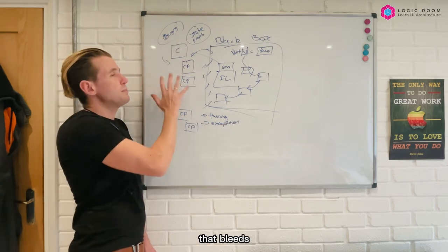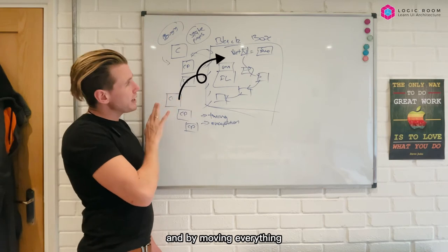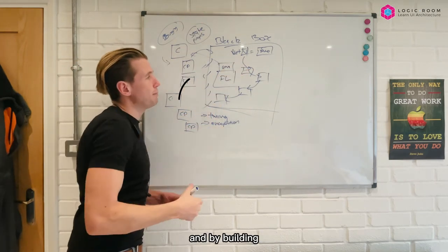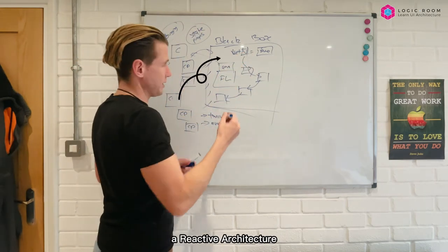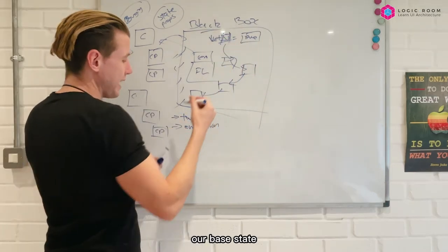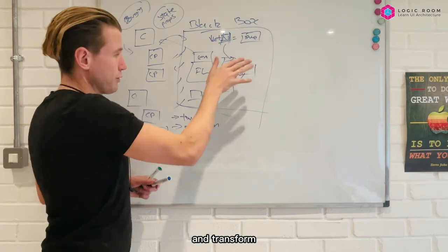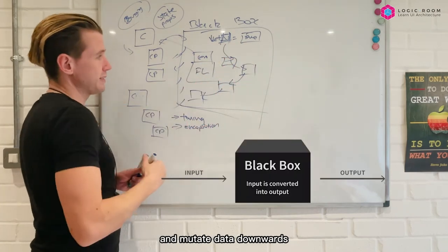And we also get encapsulation issues where we get information that bleeds from one component out into another component. And by moving everything into this black box and by building a reactive architecture where we are very careful to only set our base state and then have a series of modules that will update and transform and mutate data downwards.